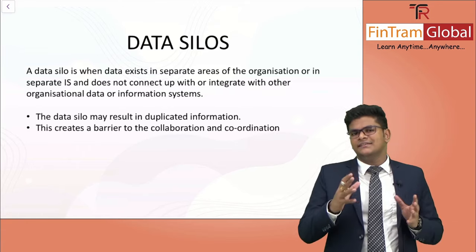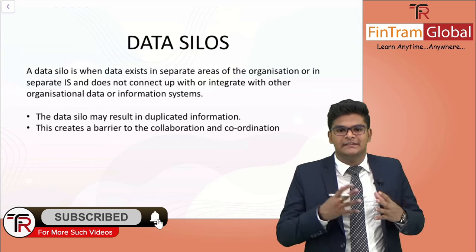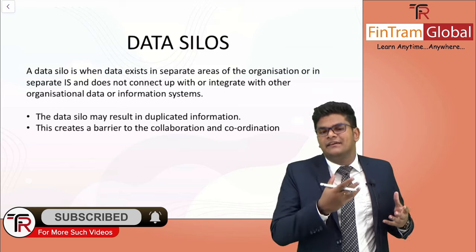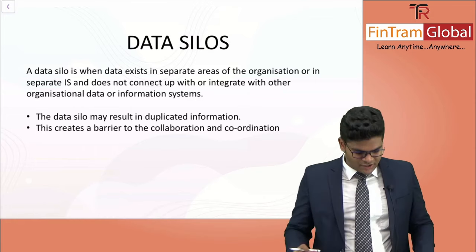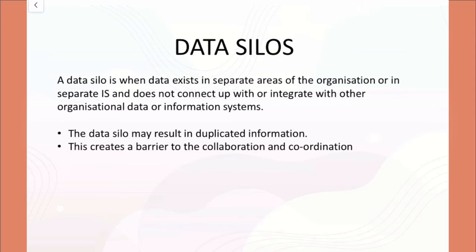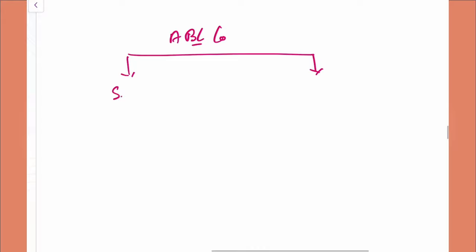Moving on to another topic added to syllabus Part B — this is a technological syllabus area. There are a few new technical topics added in relation to big data and data analytics. The first one is data silos. Let me illustrate this with an example. Let's say we have an organization — ABC Co — and our primary focus is on two departments: sales and marketing.